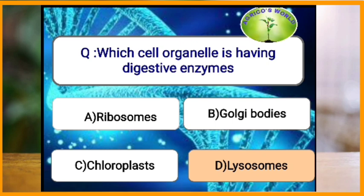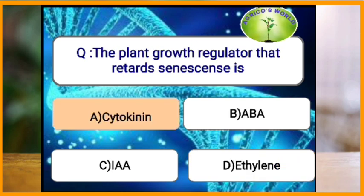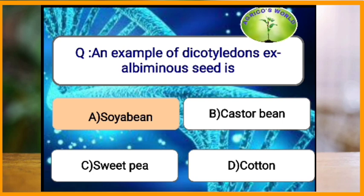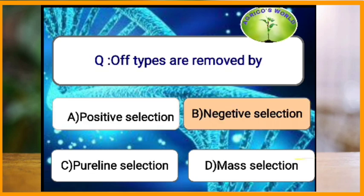The cell organelle having digestive enzymes is the lysosome, which is called the suicidal bag of the cell. The plant growth regulator that retards senescence is cytokinin. An example of a dicotyledonous exalbuminous seed is soybean.